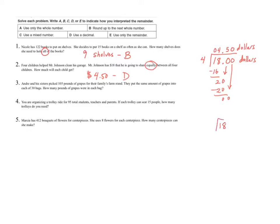Notice that if I had done this problem without making my dividend look like money, I would have gotten a remainder of $2, giving each person four and two-fourths dollars. But I wanted to change that two-fourths dollars remainder into a decimal. Because when we're talking about dollars, we're talking about dollars and cents. So I kept dividing and changed that remainder — two-fourths — into $2 split among four people, which gives each person 50 cents.